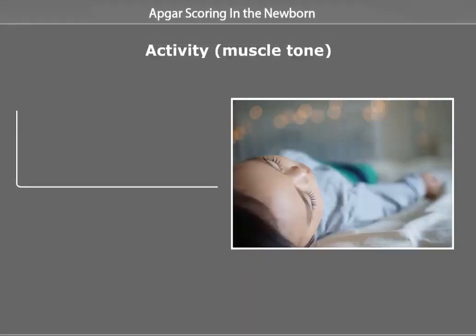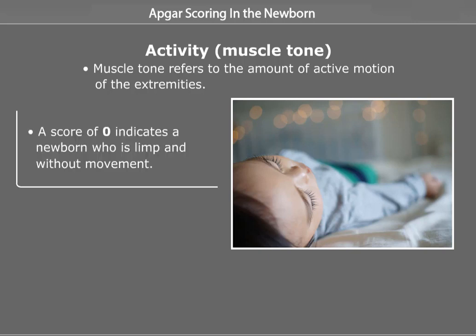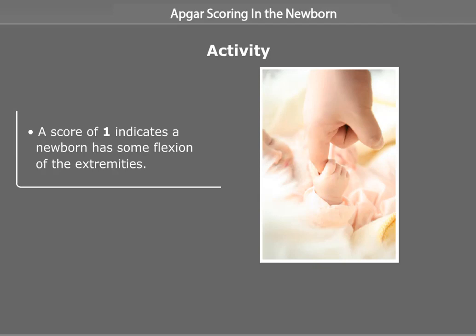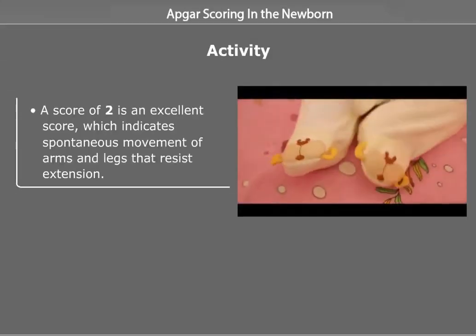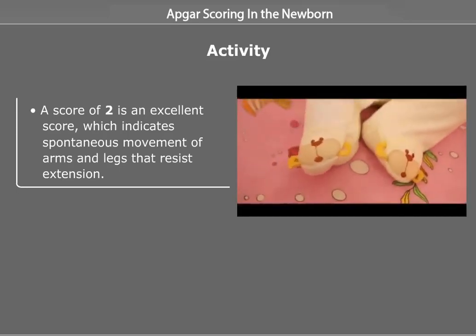Activity — Muscle Tone. Muscle Tone refers to the amount of active motion of the extremities. A score of 0 indicates a newborn who is limp and without movement. A score of 1 indicates the newborn has some flexion of the extremities. A score of 2 is an excellent score indicating spontaneous movement of arms and legs that resist extension.